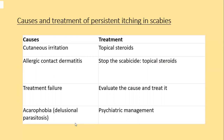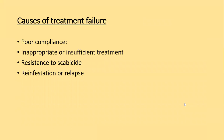Causes of persistent itching in scabies include cutaneous irritation from topically applied creams (treated with topical steroids), allergic contact dermatitis (treated with topical steroids, and scabicidal creams stopped), treatment failure (evaluate the cause and treat it), and delusion of parasitosis which sometimes occurs after prolonged scabies infestation and should be managed with psychiatric care. Causes of treatment failure include poor compliance, inappropriate or insufficient treatment, resistance to scabicidal medications, and re-infestation or relapse.